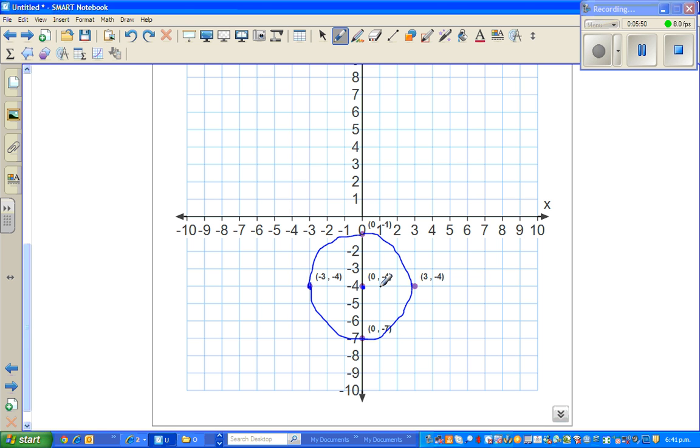So count 3 from here, 1, 2, 3. So this is one coordinate, which is 3, negative 4. If you count from here, this is 1, 2, 3. So this point is 0, negative 1. If you count 3 to the left, that is 1, 2, 3, which is negative 3, negative 4. And if you count 3, 2, 3 down, it is 0, negative 7. So if you join the points, this is a circle.